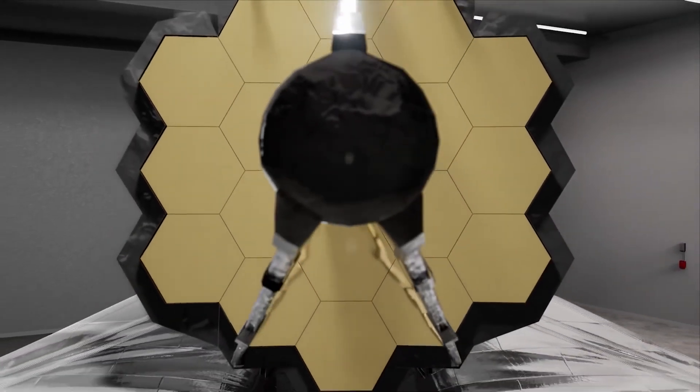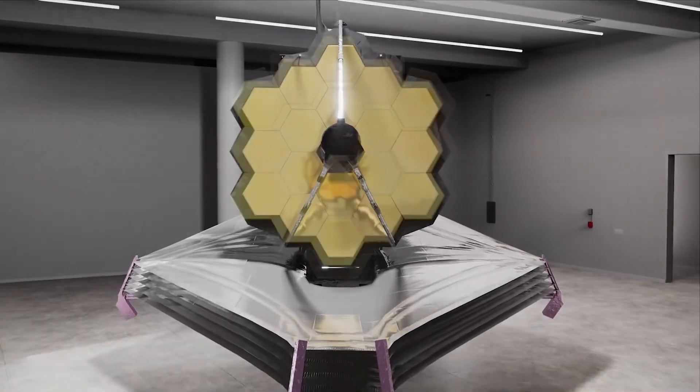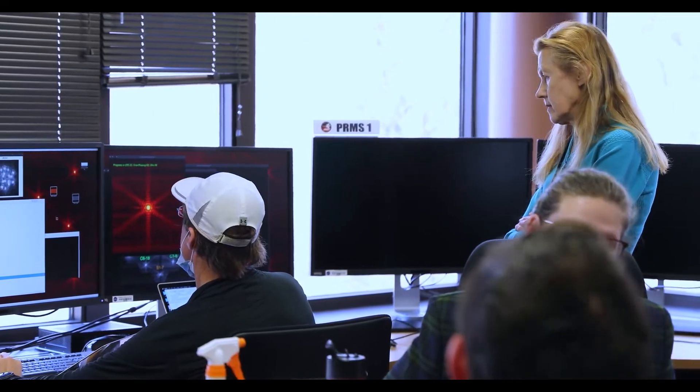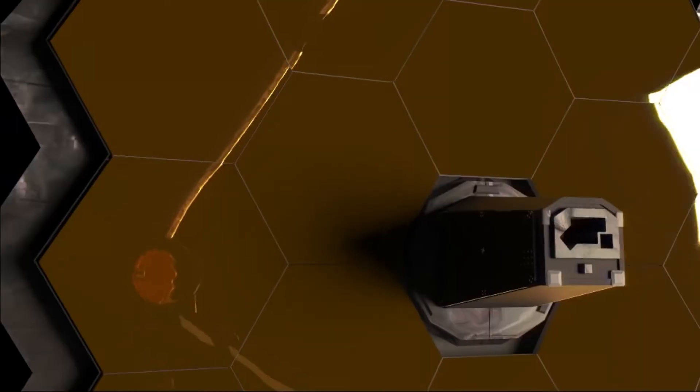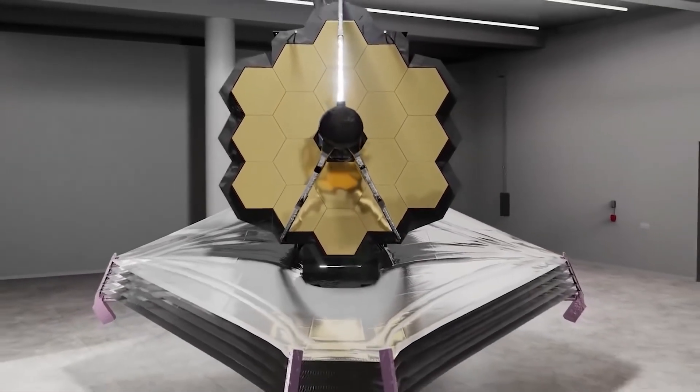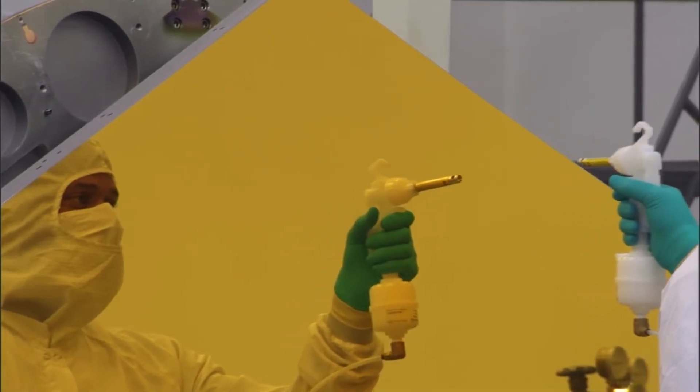Next, the aft-deployable instrument radiator, which vents heat from the space telescope's science equipment into space, was deployed. Finally, the two side panels that make up JWST's 6.5-meter primary mirror are deployed. Its 18 hexagonal pieces are constructed on beryllium that has been plated in pure gold.